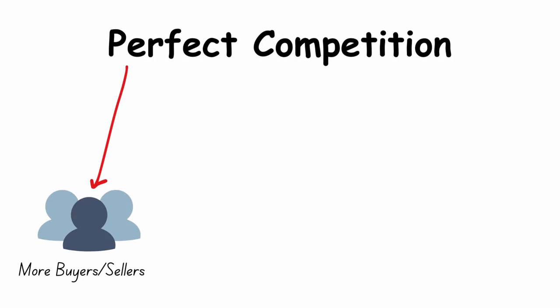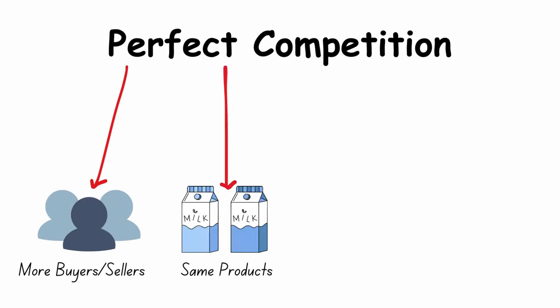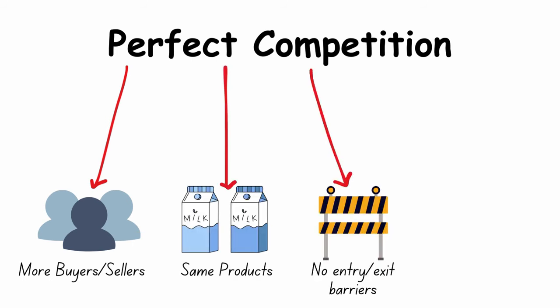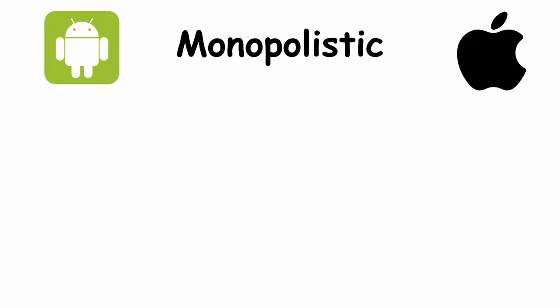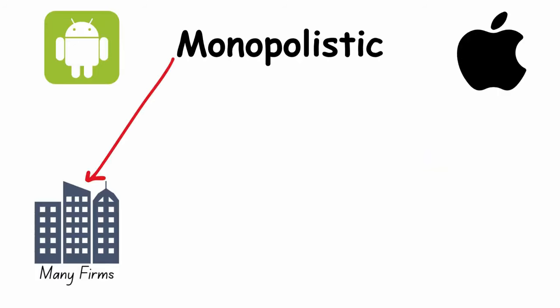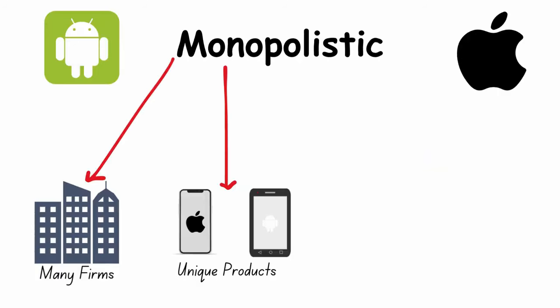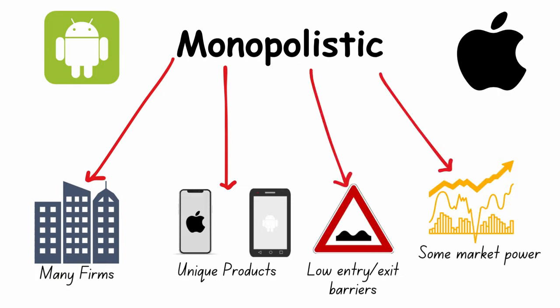Perfect competition has many buyers and sellers, the same products, no entry or exit barriers, and no market power. Monopolistic competition has many firms, unique products, a low entry/exit barrier, and each firm will have some market power.